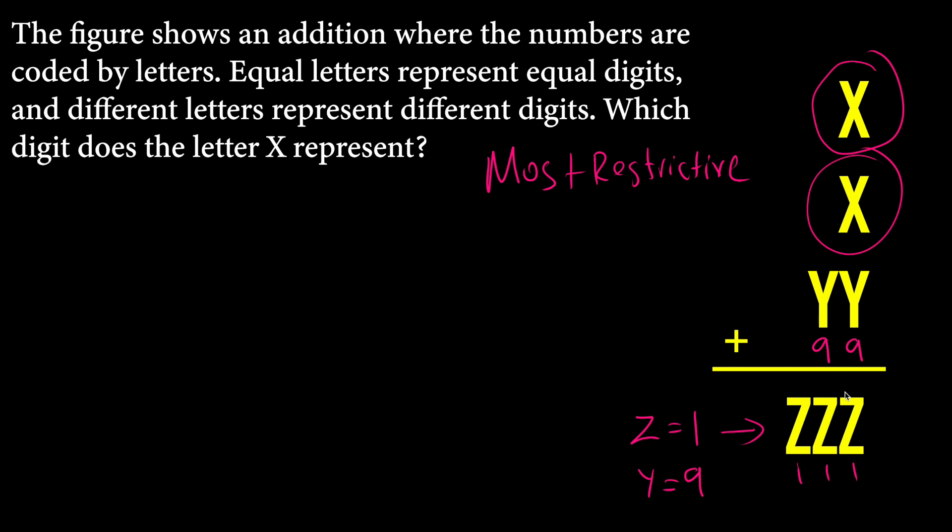So it cannot be 2. It cannot be 0. So that's the only certain value is 1. So YY is added, 99 is added to XX. Let's rewrite this here.